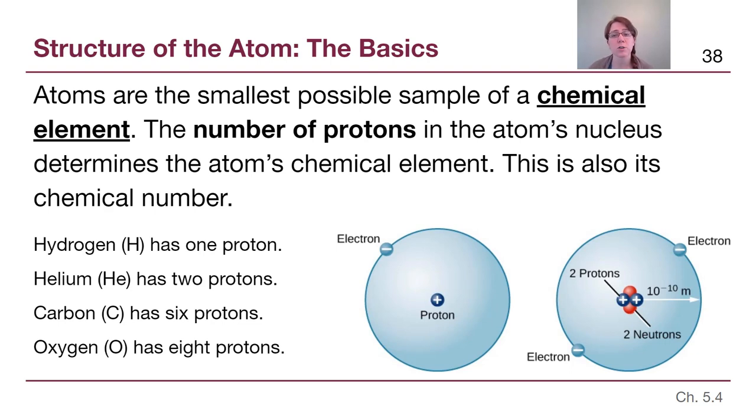Now atoms are the smallest possible sample of a chemical element. And if you've ever seen the periodic table, and hopefully you have before this class, but you're welcome to kind of revisit pictures online. All of the different elements in the periodic table have different names because they contain a different number of protons from each other. The total number of protons in the nucleus of an atom determines what element we call that atom.